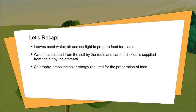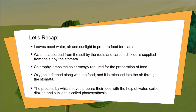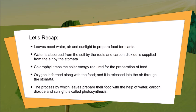Chlorophyll traps the solar energy required for the preparation of food. Oxygen is formed along with the food and it is released into the air through the stomata. The process by which leaves prepare their food with the help of water, carbon dioxide, and sunlight is called photosynthesis.